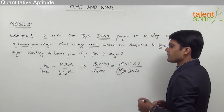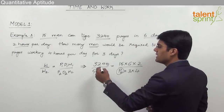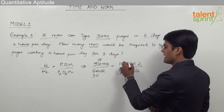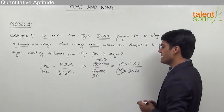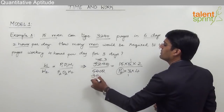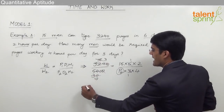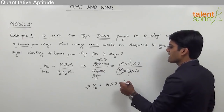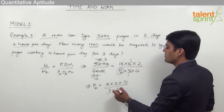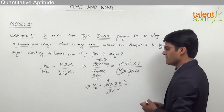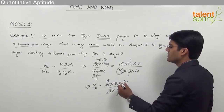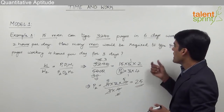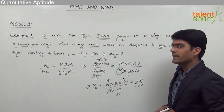Simplifying: 3240 = 18 × 18 and 5400 = 18 × 30. After cancellations, P2 = (15 × 2 × 10) / (3 × 4) = 25. So 25 men are required to type 5400 pages working 4 hours per day in 3 days.